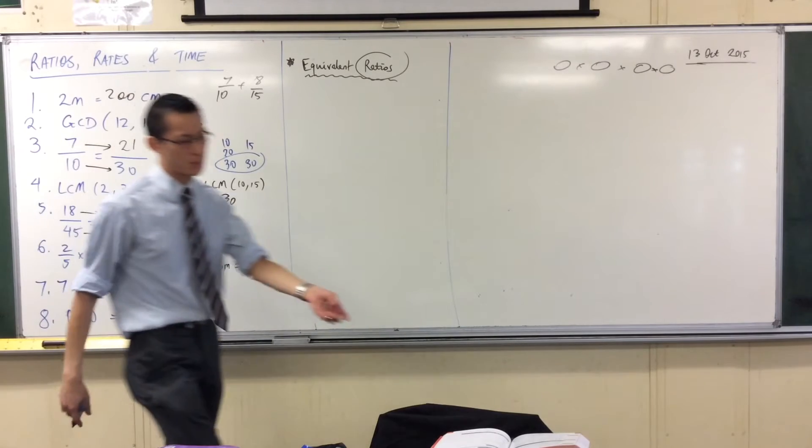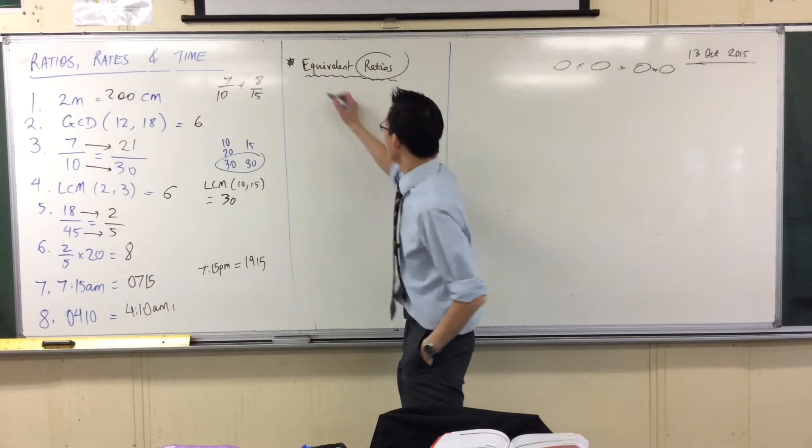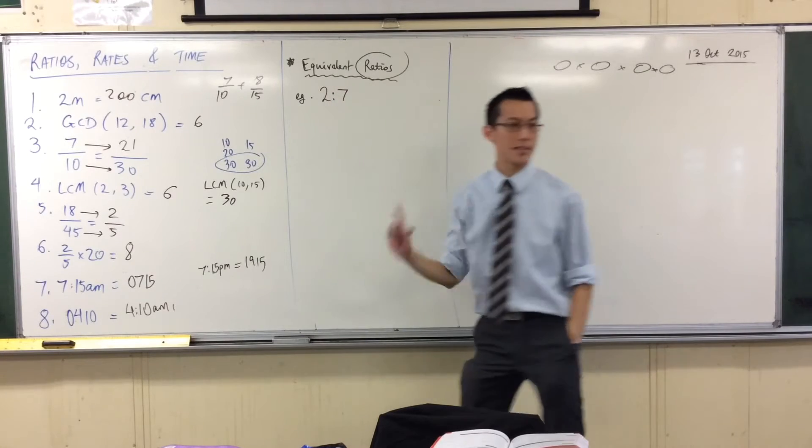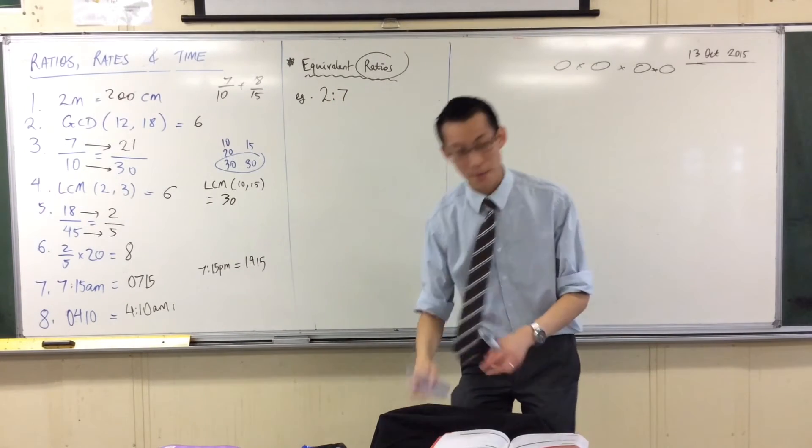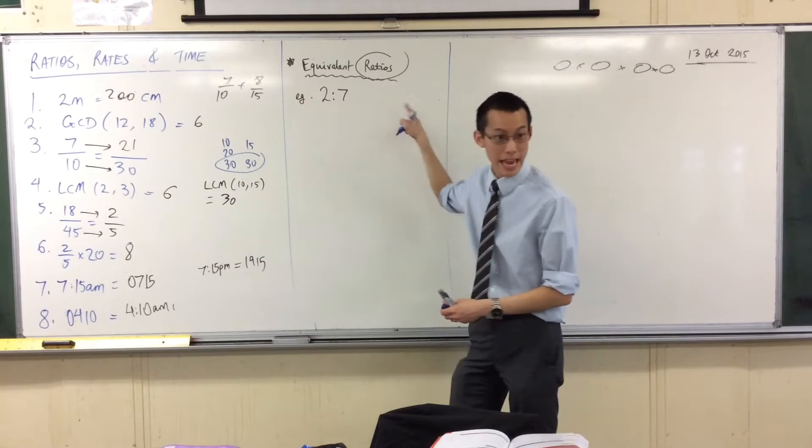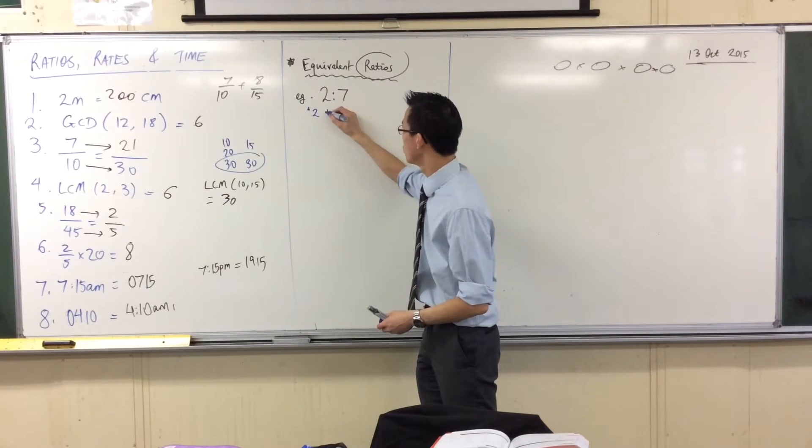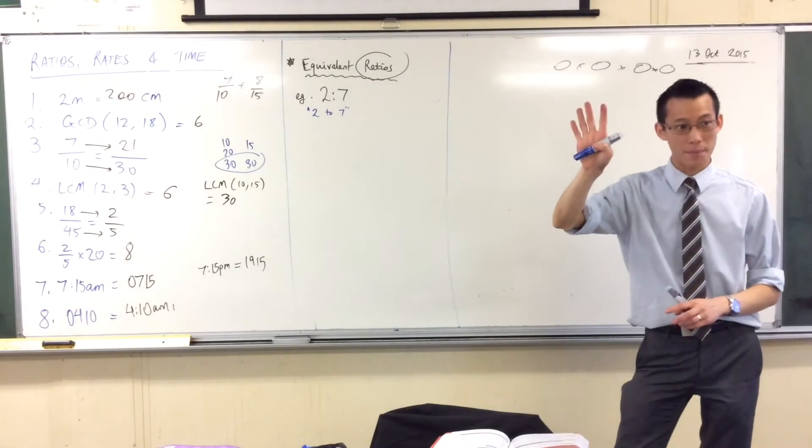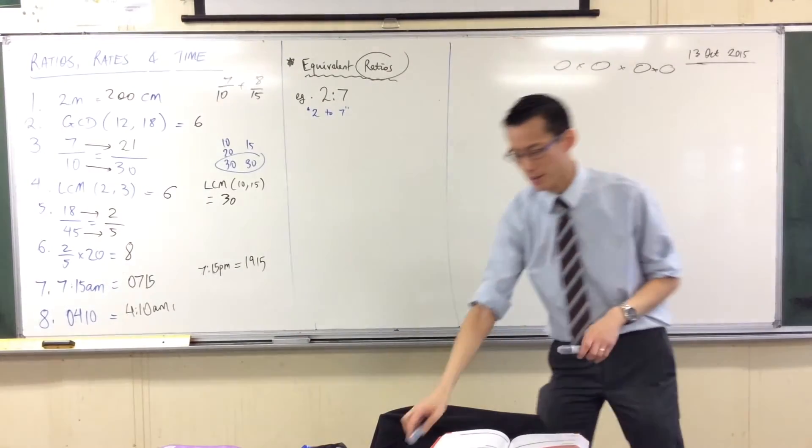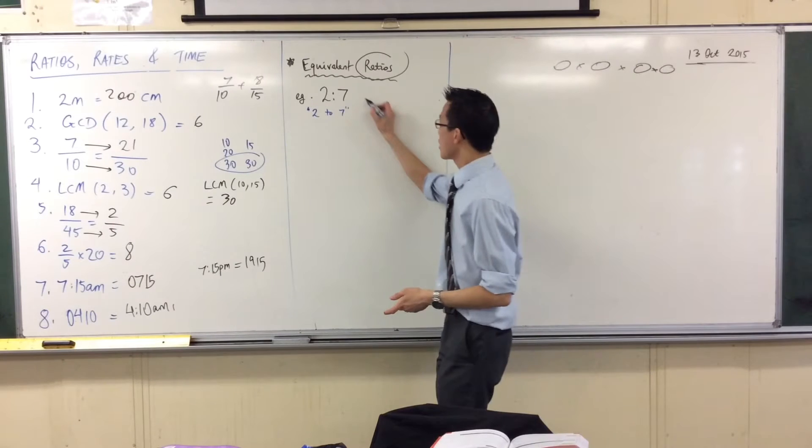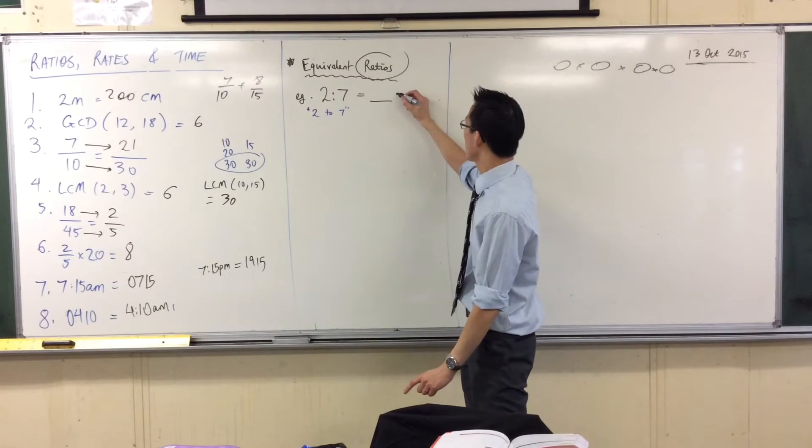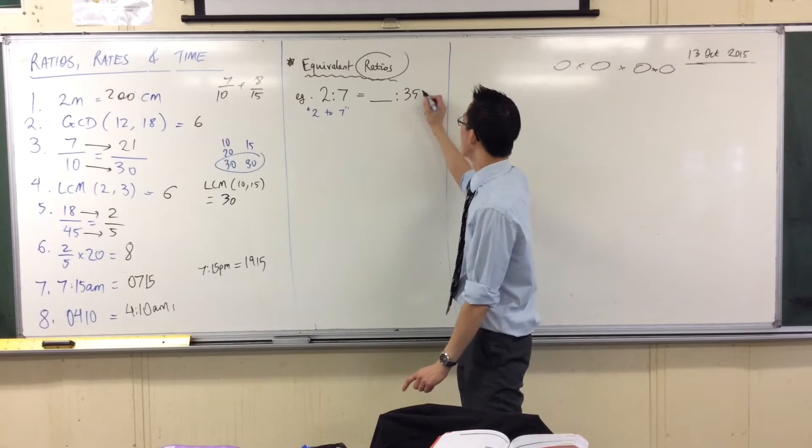Okay, so one of the first examples they've got is, here we go, example, two to seven. That's the way I read that by the way. The way I say this is two to seven. For every two of something I've got seven of something else. That's equal to, and the ratio they're comparing us to is something to 35.